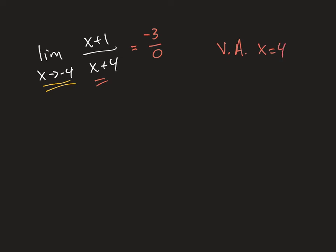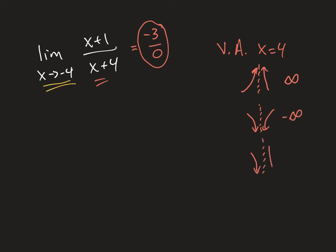We want to decide if we can characterize what's happening as either infinity or negative infinity. If both sides of the asymptote head to positive infinity, the limit is infinity. If both sides head to negative infinity, the limit is negative infinity. But if one side goes to negative infinity and the other to positive infinity, we say the limit does not exist. So we have to check the left and right-hand limits.